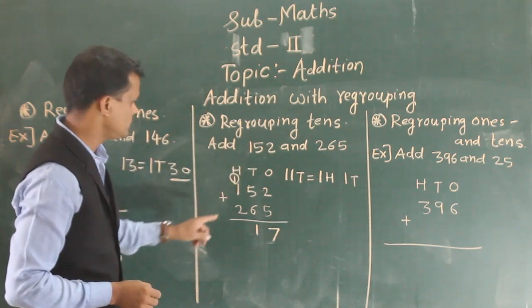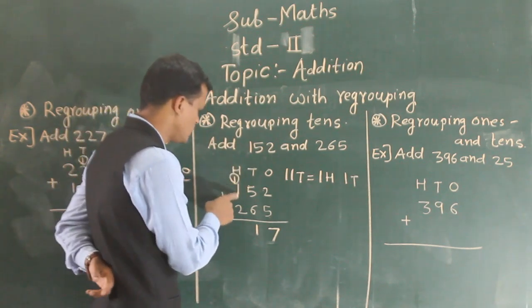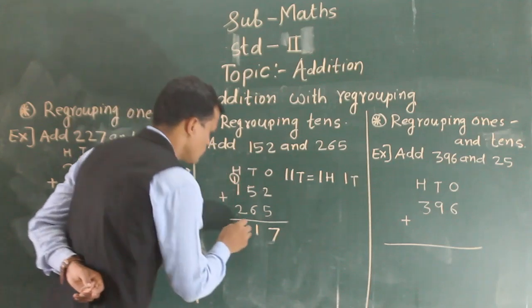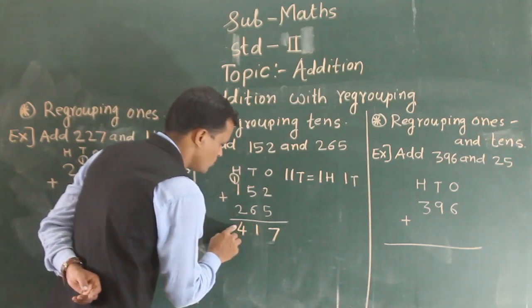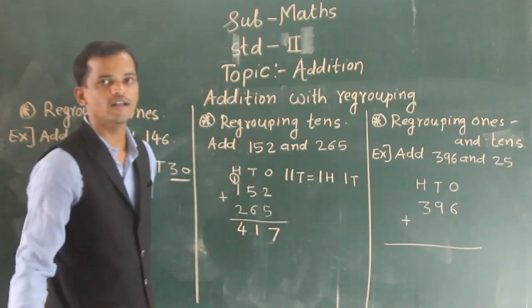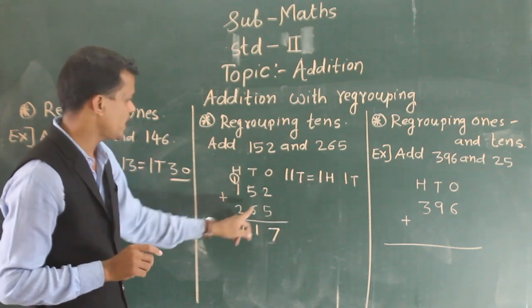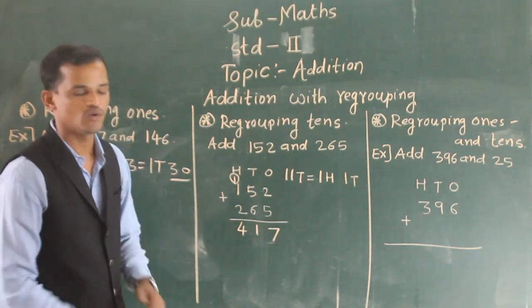Now add the hundreds column, 1 plus 2, 3, 1, 4. So 417 is the sum of 152 and 265. Then next,